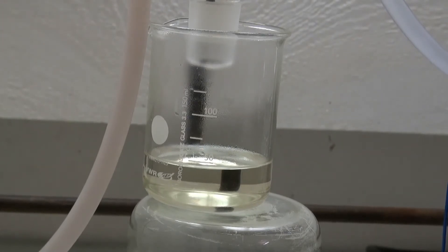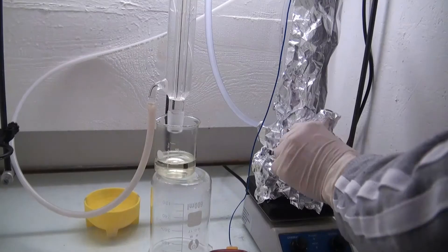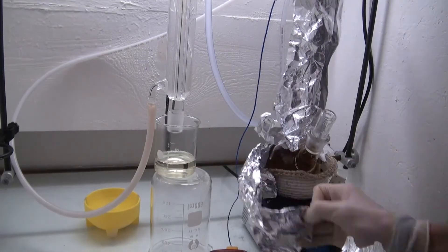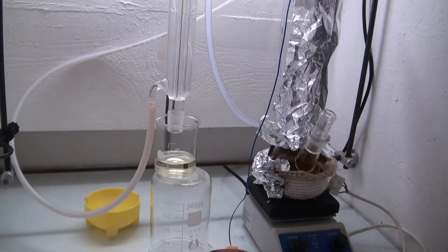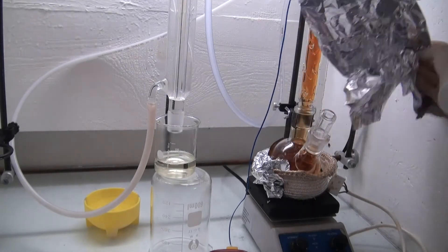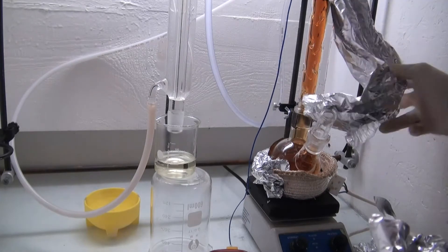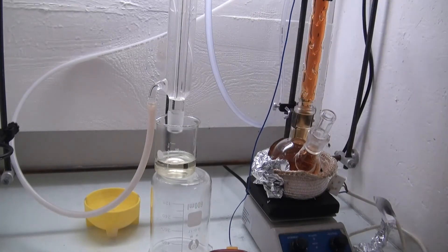Four hours later the distillation was stopped and the aluminum foil was removed. This uncovered that both the flask and the fractionating column were filled with nitrogen dioxide.